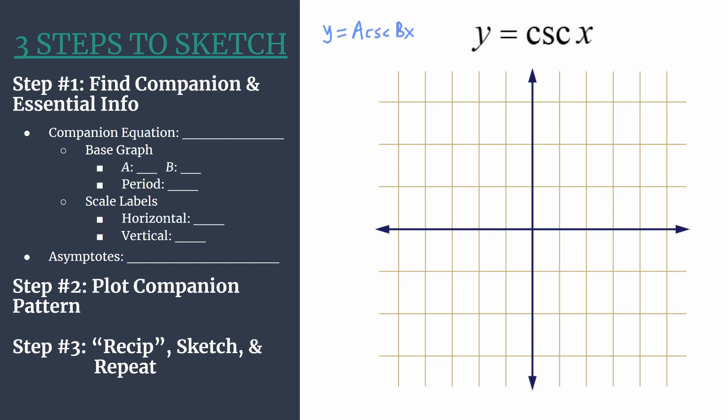Step one is to find the companion equation and its essential info along with the asymptotes for the graph. Our companion equation is the reciprocal. If we have y equals 1 cosecant 1x, replace cosecant with sine and that's the companion equation, so y equals sine x. We're essentially going to graph the companion equation and then use it to get the reciprocal graph that we want. We're going through the method to help you understand so you can use it for any unshifted cosecant equation.